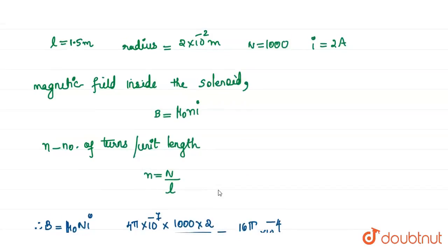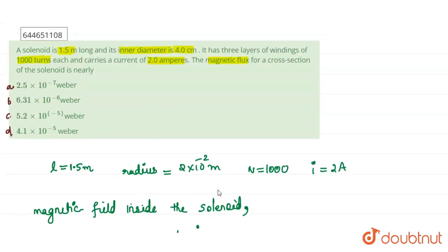Okay, so the magnetic flux is 6.31, so we can match our answer with the option: 6.31 × 10⁻⁶ weber. So option B is the correct answer.